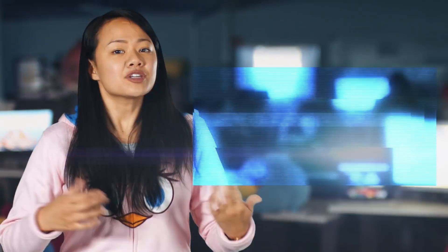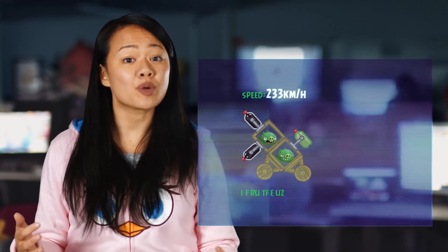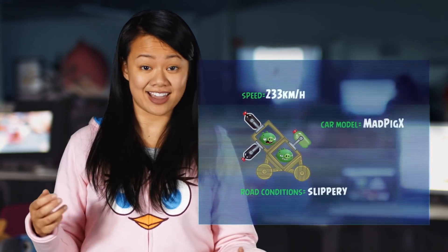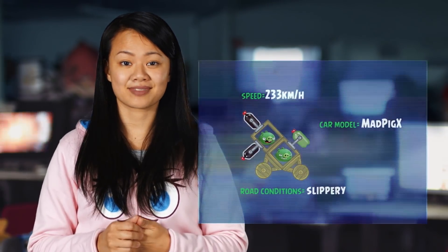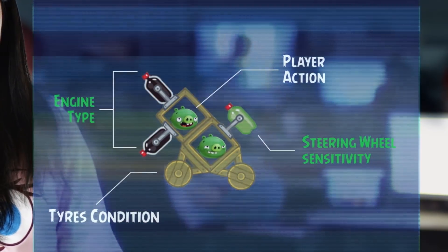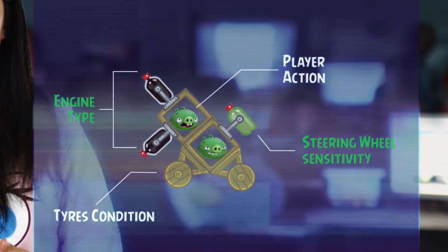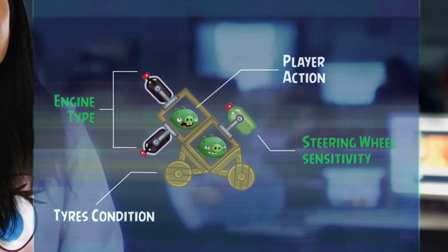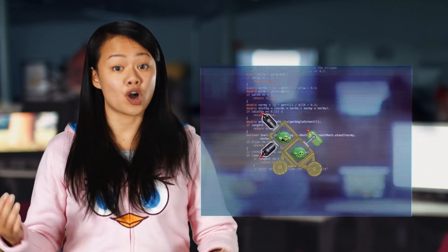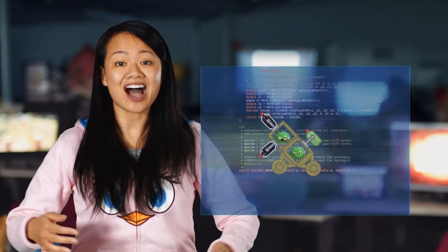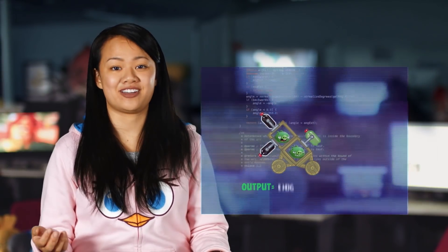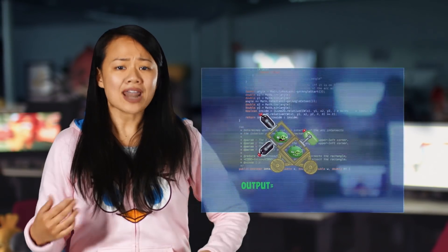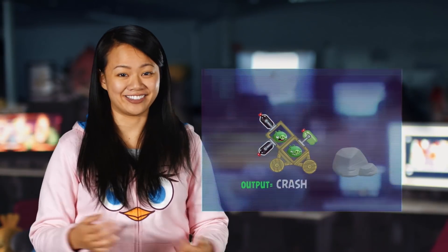Or what happens to the parts of the vehicle when it crashes. So an algorithm takes into account the situation and other input information, and based on the idea the coder had, calculates an output — that is, what happens to the vehicle.